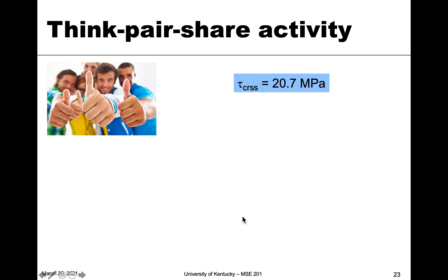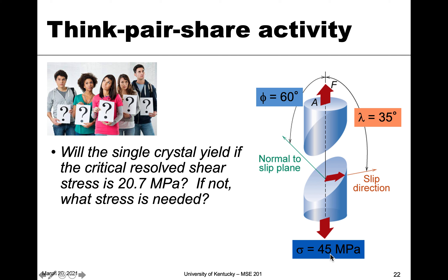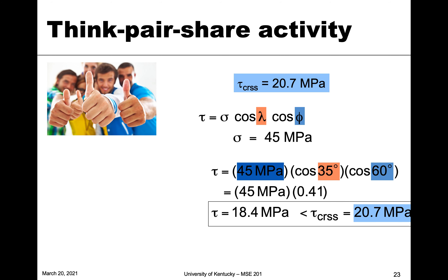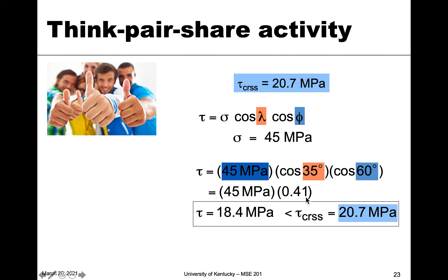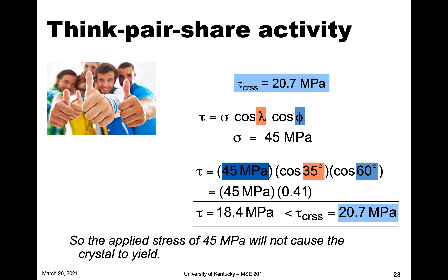Let's look at what that means. If we apply 45 megapascals of tensile stress to this bar, for the plane and direction we're specifying, the resolved shear stress in that plane and direction is going to be 18.4 megapascals. We know the critical resolved shear stress is 20.7 megapascals, so our resolved shear stress is less than that critical value, and therefore the applied stress is not enough to cause this crystal to yield.